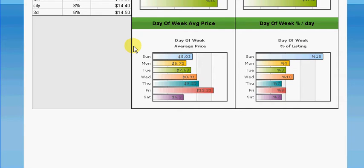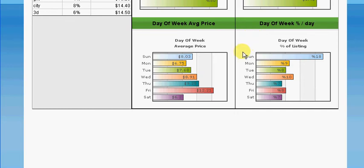These last two charts are the most interesting. The first shows the day of the week and what the average price was each day — Friday determined the highest average sale price, which in this example was £12.21. The last graph shows what day of the week had the most number of successful listings, which by far was Sunday. That's likely because many eBay sellers think Sunday is the best day to have their auction end, so they list accordingly — which is probably why we see the highest number of successful winning auctions ending on a Sunday.